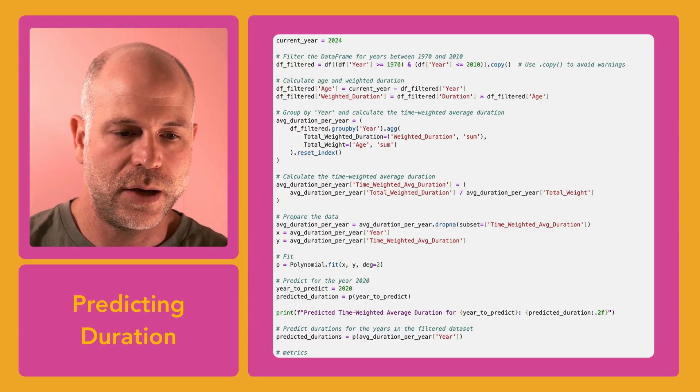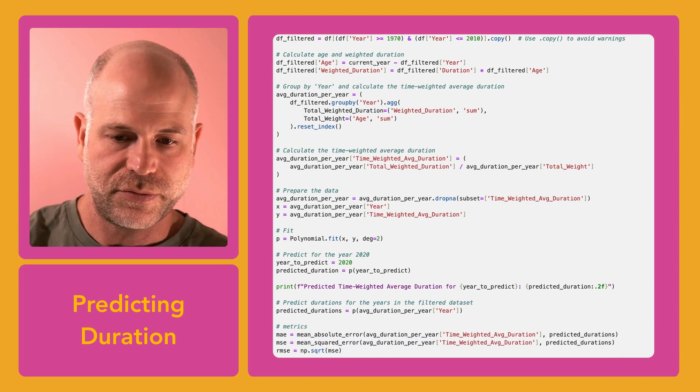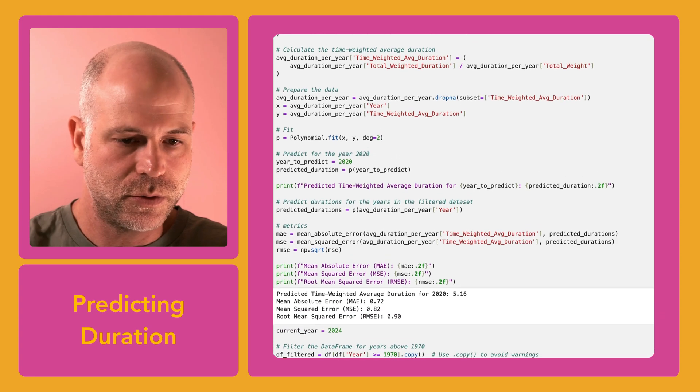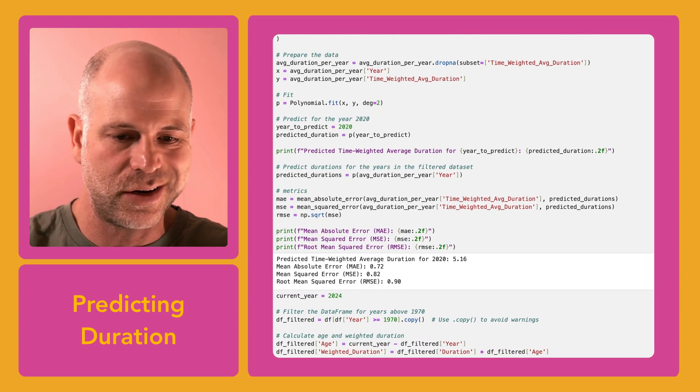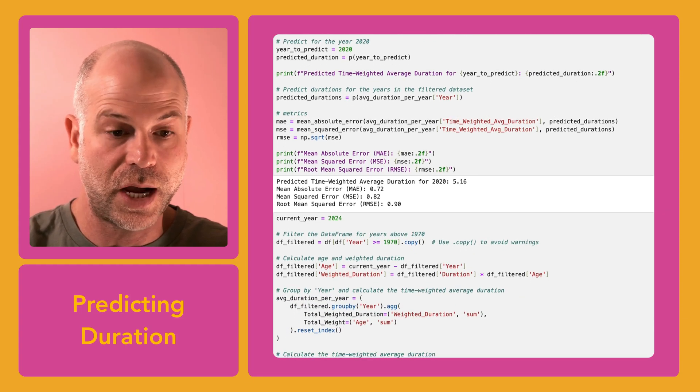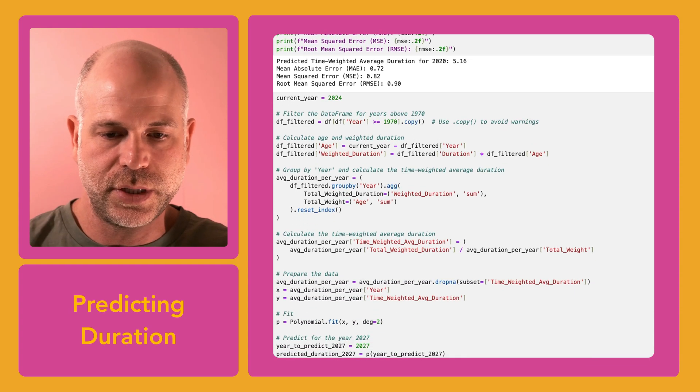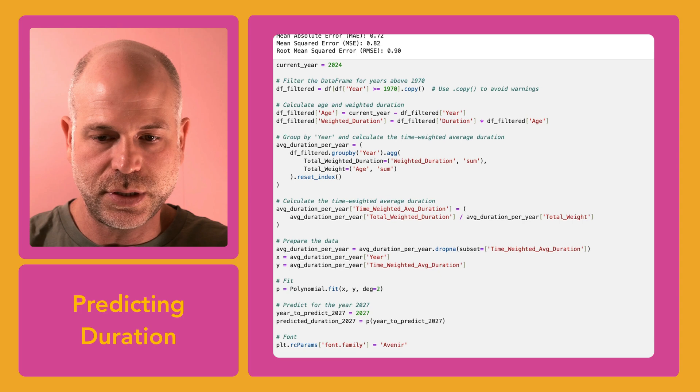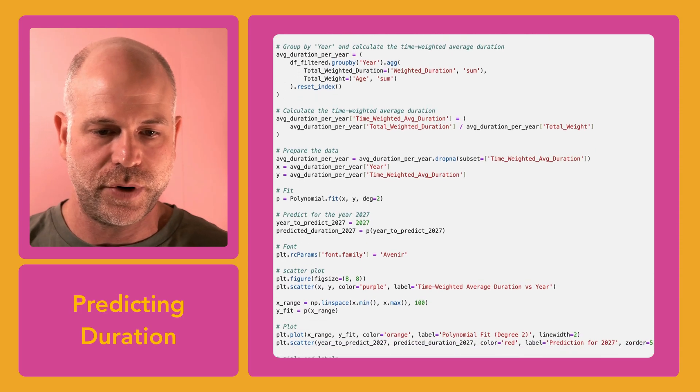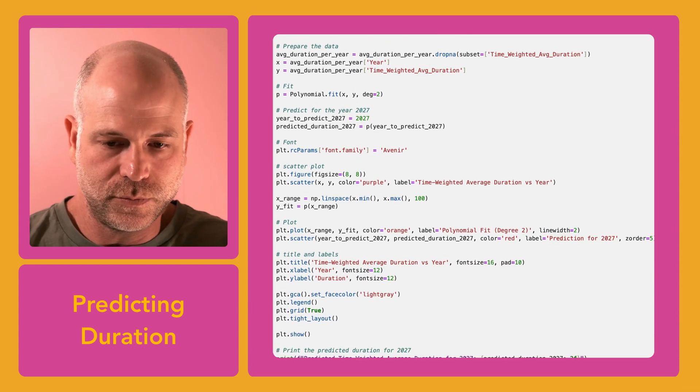Then I wanted to explore the average production years of synths over time. What I did is I filtered the data frame to focus on synths made between the 1970s and the 2010s, allowing me to calculate the average duration of each year. And to make it a little bit more accurate, I used some time-weighting, and this approach involves calculating average duration based on the age of each synth, effectively giving more weight to synths that have been around longer. The reason I'm doing this is that older synths are likely to have longer shelf-lives compared to new models, which haven't been on the market that long. We need to account for that.